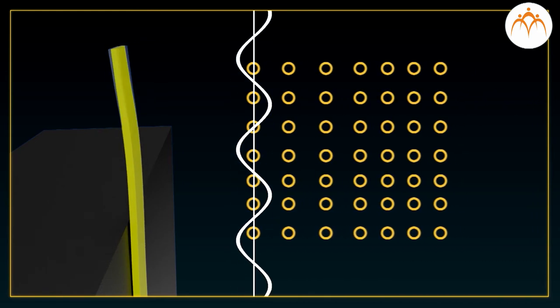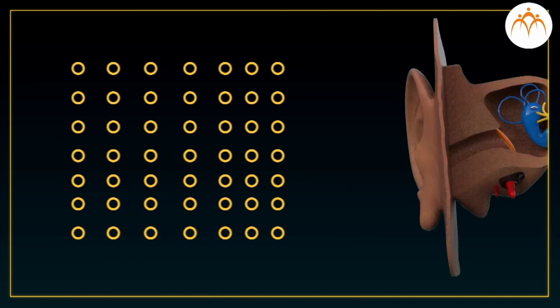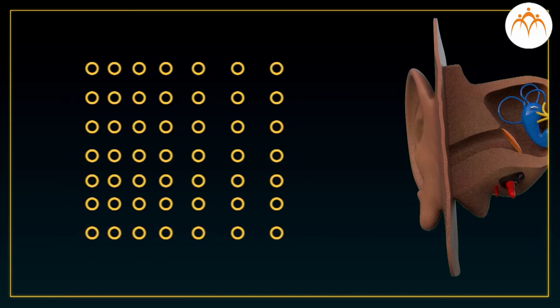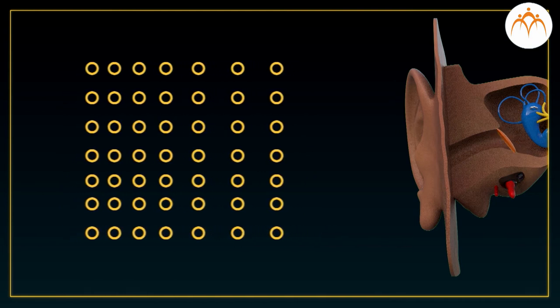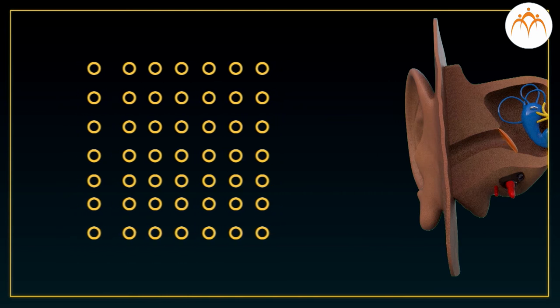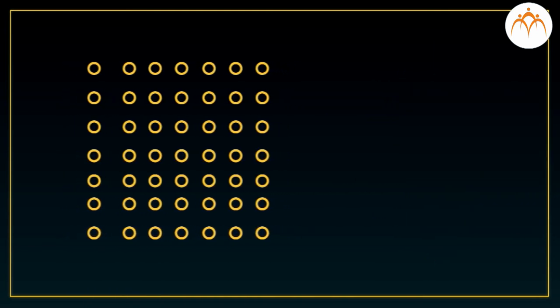When the ruler vibrates, it displaces the air molecules in the air. The eardrum in your ear is pushed in and out by the molecules of air in contact with it. When this eardrum moves back and forth, electrical signals are sent to the brain and that's how we hear the sound made by the ruler.